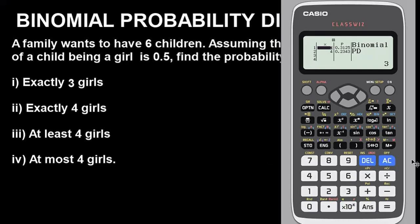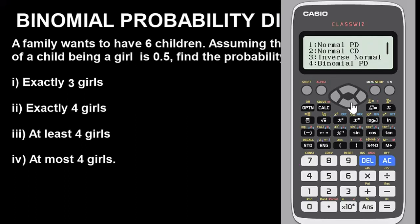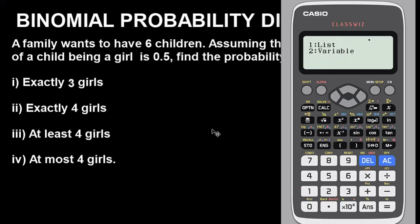Now let's find 'at least four girls', for which we use Binomial CD, not PD. Clear and go back to Menu, press 7 for Distribution, then press 1 for Binomial CD. Press 2 to select Variable. Now, for 'at least four girls', you might think the X value should be 4, and by right it should be — but this is very important, so listen carefully.